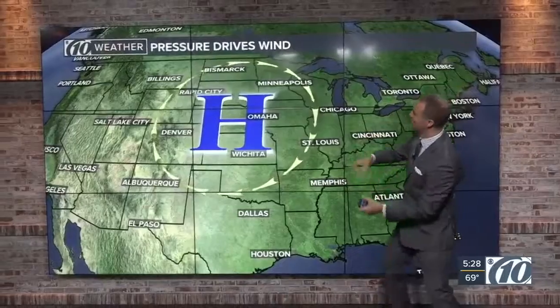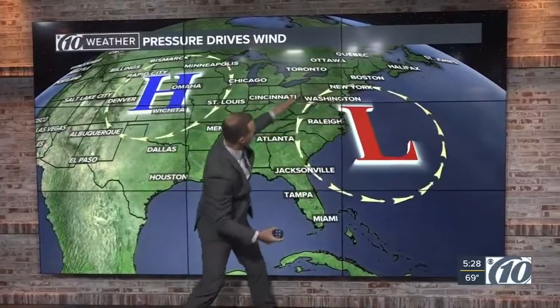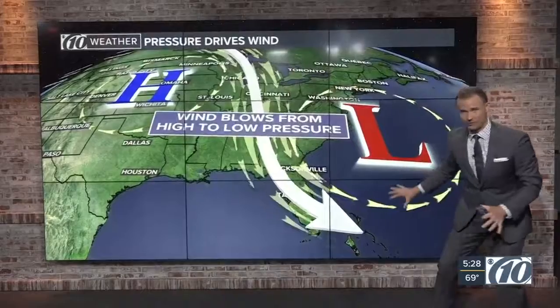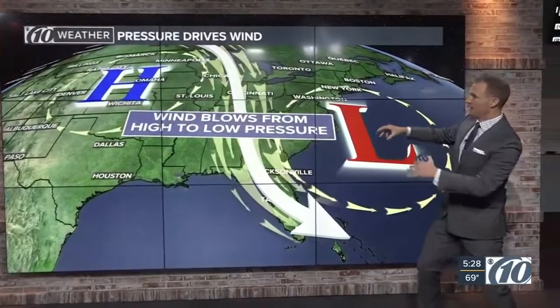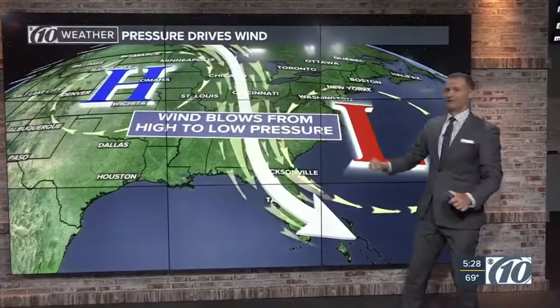So we've got high pressure. Areas of high pressure and low pressure are created by differences in temperatures and differences in how the earth heats up and how it cools. In the northern hemisphere, wind goes around high pressure in a clockwise fashion. Low pressure is the complete opposite — wind flows in the counterclockwise direction. But how does wind form? Wind flows from high pressure to low pressure. When you have high pressure, the wind will go from that area of high pressure to that area of low pressure.